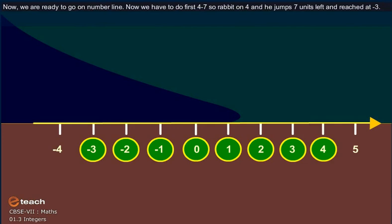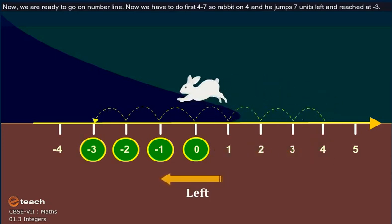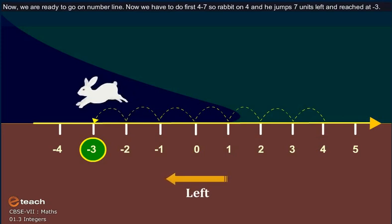Now, we are ready to go on number line. Now, we have to do first 4 minus 7. So, rabbit on 4 and he jumps 7 units left and reached at minus 3.